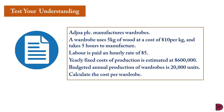Let's test understanding. Actual PLC manufactures wardrobes. A wardrobe uses 5 kilograms of wood at a cost of $10 per kilogram and takes 5 hours to manufacture. Labor is paid an hourly rate of $5. The yearly fixed cost of production is estimated at $600,000, and the budgeted annual production of wardrobes is 20,000 units. We are to calculate the cost per wardrobe, spreading the $600,000 fixed cost over the 20,000 units to arrive at the total cost per wardrobe.